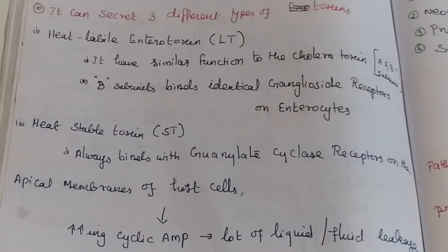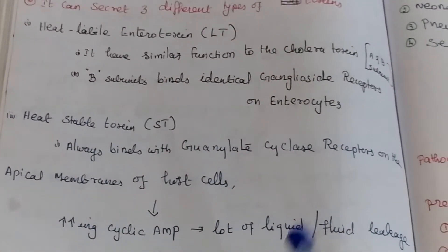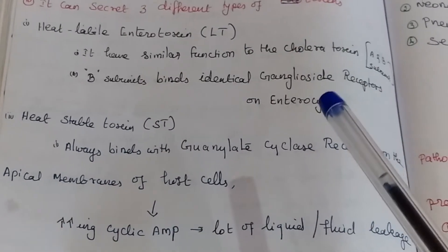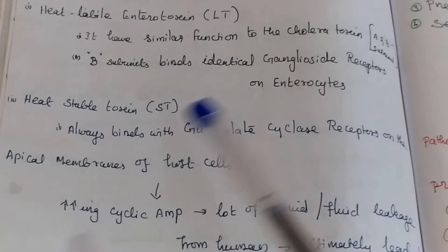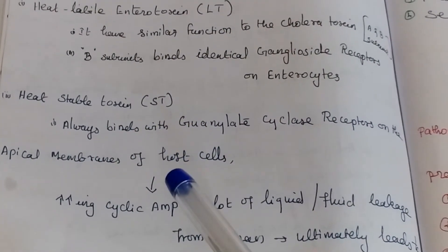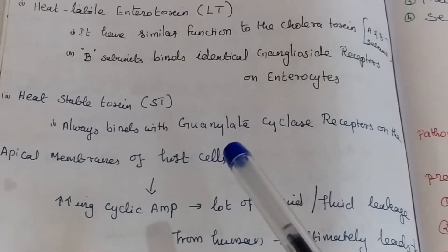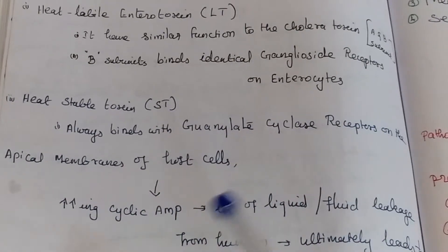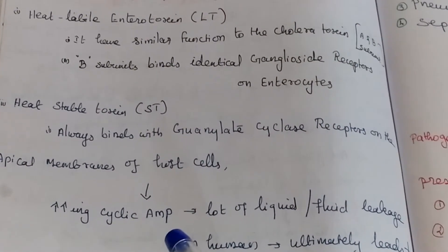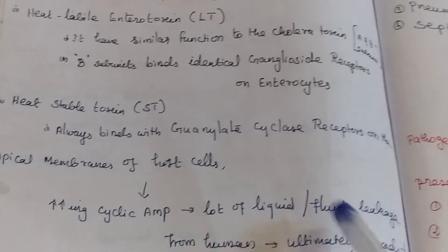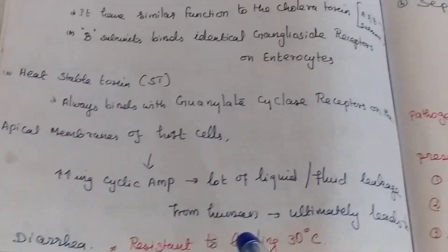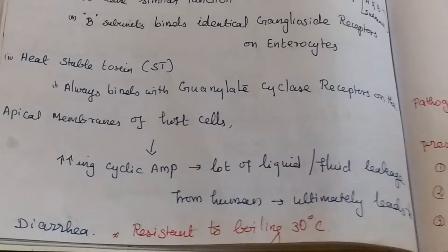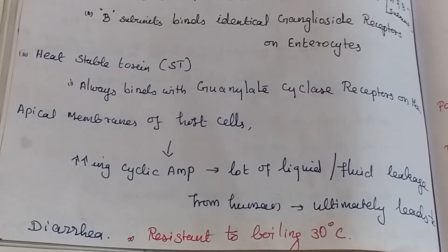The heat-stable toxin is resistant to boiling at 100 degrees Celsius. To summarize: heat-labile toxin binds with the ganglioside receptor; heat-stable toxin binds with guanylate cyclase receptor, increasing cyclic AMP, causing fluid leakage and diarrhea.